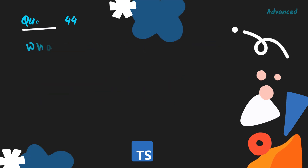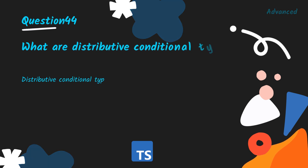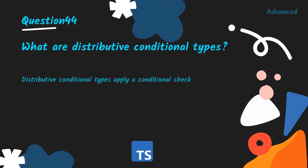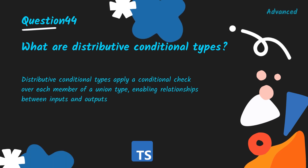What are distributive conditional types? Distributive conditional types apply a conditional check over each member of a union type, enabling relationships between inputs and outputs based on specific conditions.